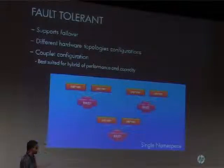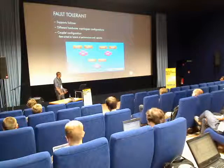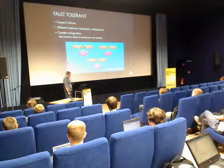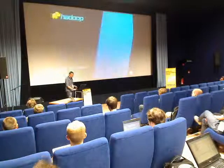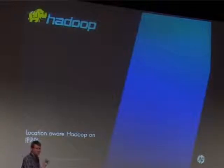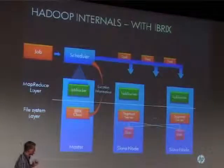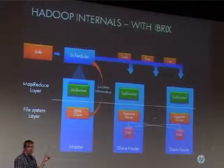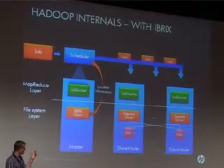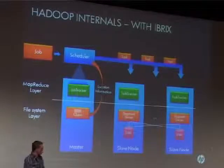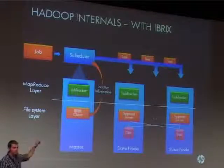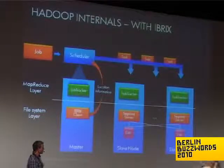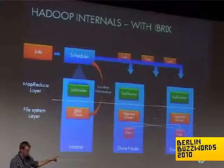So this is iBrix — a segmented file system with the option of running in a very high fault tolerant mode using RAID. How does this fit into the Hadoop picture? Using the same architecture diagram as before but replacing HDFS components with iBrix equivalents: instead of running data nodes on the slaves, I'm running segment servers. I get rid of the single master. What this gives you is that you're running the computations — the task tracker — directly on the storage node itself.